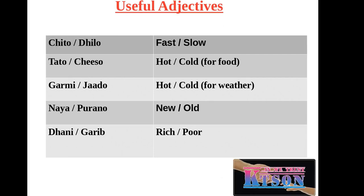Chito means fast, dhilo means slow. Tato means hot and chiso means cold — these are used for food items. Garmi means hot and jado means cold — these are used for weather.